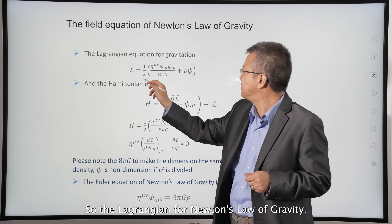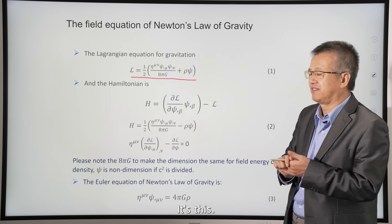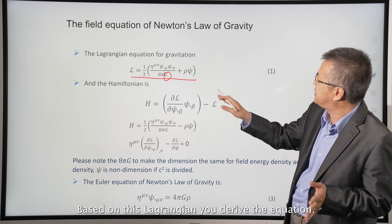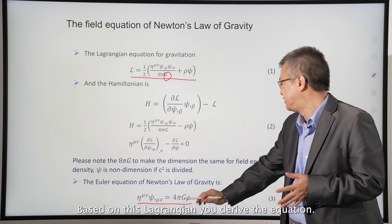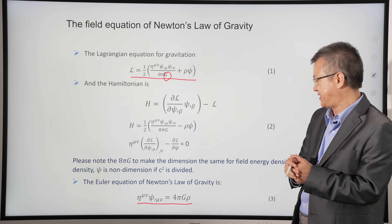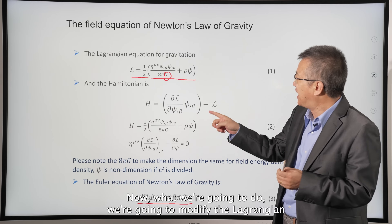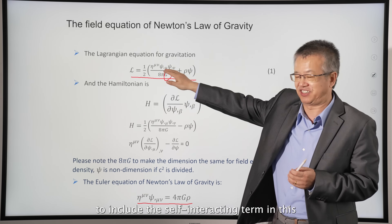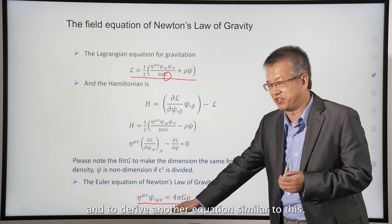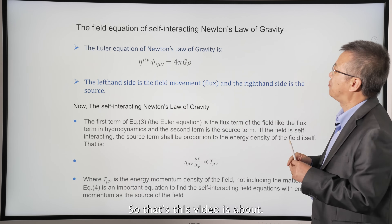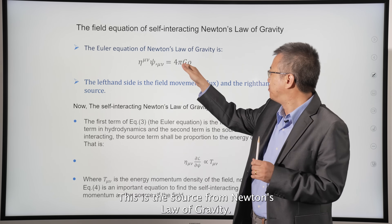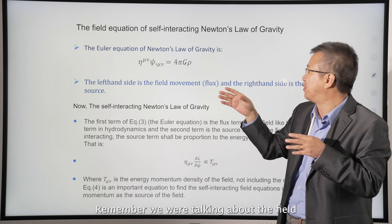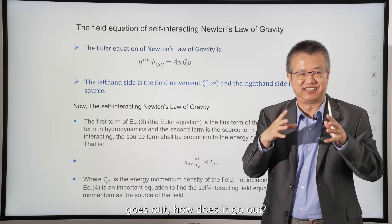The Lagrangian for Newton's law of gravity has a gravitational constant G. Based on this Lagrangian you derive Newton's law of gravity. What we're going to do is modify the Lagrangian to include the self-interacting term and derive another equation similar to Newton's law. This is the source term and the field term — how the field dissipates and travels.